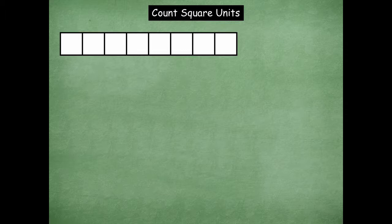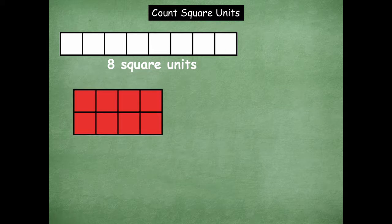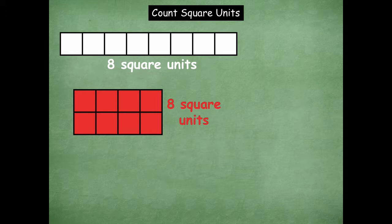Here's your first rectangle. How many square units are in it? Eight square units — you can count them: one, two, three, four, five, six, seven, eight. Now here's another rectangle. How many square units are in this one? Still eight square units. What do you notice about those two rectangles? They don't look the same, but they both have eight square units.